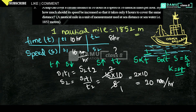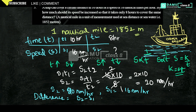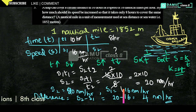So the new speed S2 is 20 nautical miles per hour, and S1 is 16 nautical miles per hour. They are asking how much the speed should be increased. The increase in speed is S2 minus S1, that is 20 minus 16, which equals 4 nautical miles per hour. If you increase the speed by 4 nautical miles per hour, you get the answer. Thanks for watching, please subscribe.